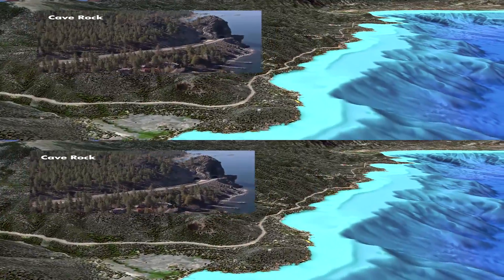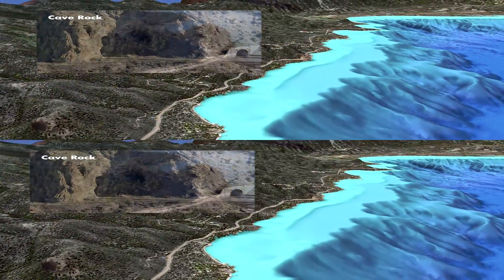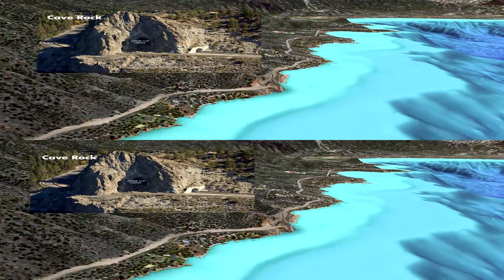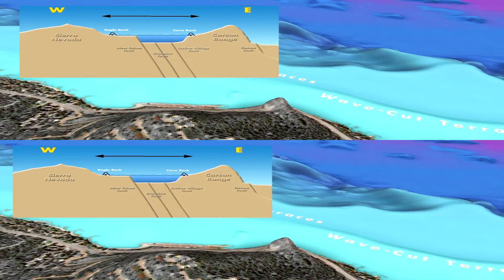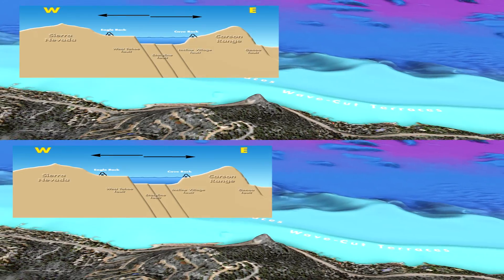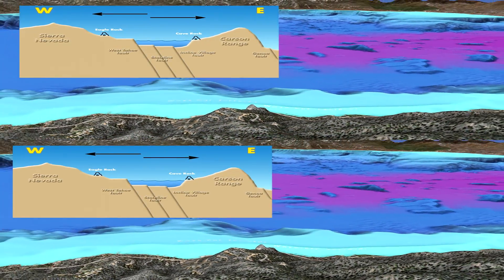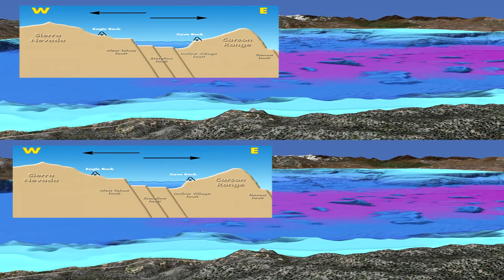The natural caves in Cave Rock were cut by wave action about 60,000 years ago, when the lake level was much higher. Similar caves can be found in Eagle Rock on the west side of the lake. Wave action also cuts terraces into the offshore sediment. Ancient terraces benchmark the changes in elevation due to movement along the faults. Caves and terraces on the west side are higher relative to caves and terraces of the same age on the east side, confirming the long-term trends of fault movement in the basin.